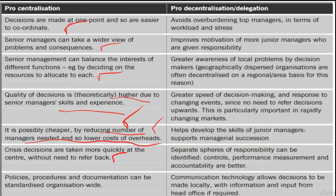Crisis decisions are taken more quickly because decision making is concentrated at one point — if the issue were delegated to different portions or functions, crisis decisions would definitely be delayed. Policies, procedures, and documentation can be standardized organization-wide across all departments, resulting in unified policies so employees across different functions are not in disagreement or demotivated by differing incentives.